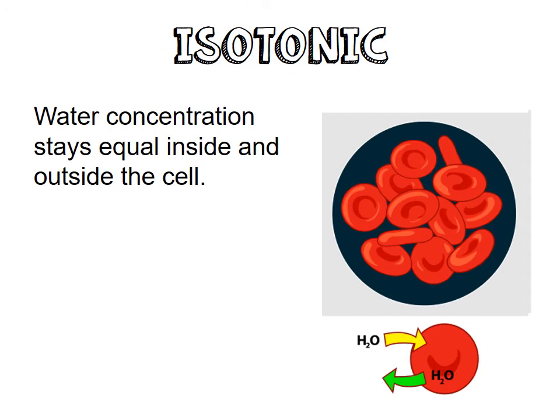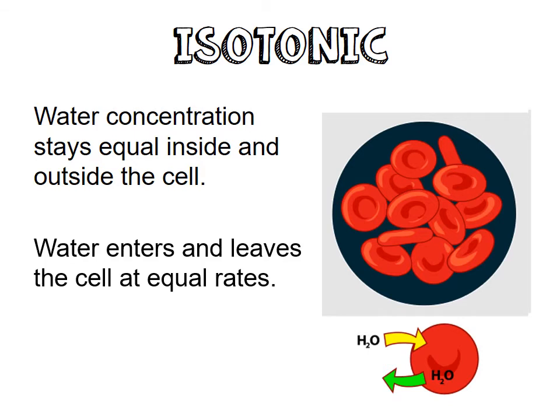Isotonic solutions are where the water concentration stays equal inside and outside of the cell. Water goes in and water goes out at equal rates — there is no net movement. The cell is in equilibrium, and that is exactly what we want.